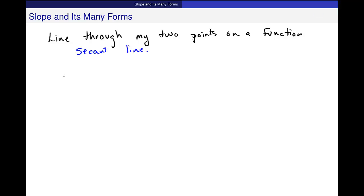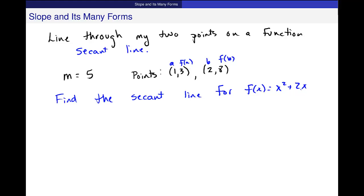So I want to go ahead and we found that the slope was 5, right? And I had these two points. The points were (1, 3) and (2, 8), right? So think back. This was my a, b, and this is f of a, f of b. So to find the equation of the secant line, for f of x equal to x squared plus 2x, I use this information containing x equal to 1 and x equal to 2. I use this information that I have calculated before.